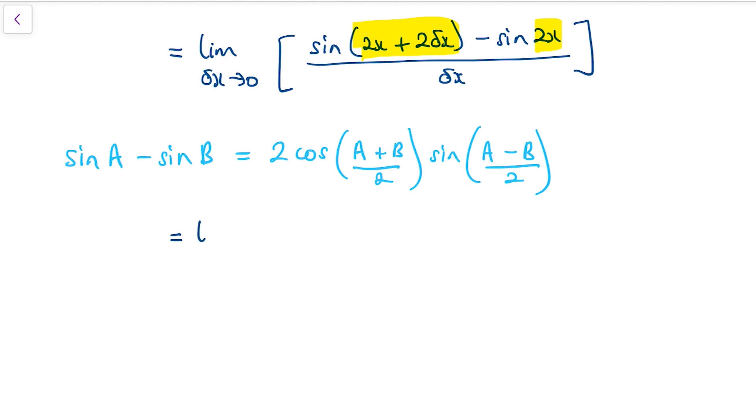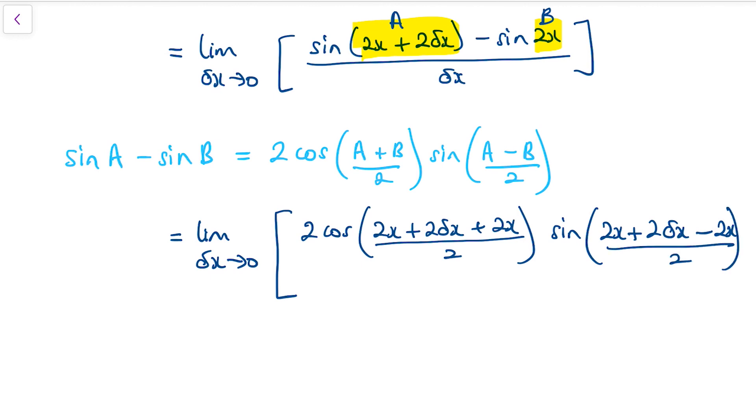We've still got the limit as delta x tends to 0. Now A is the 2x plus 2 delta x, and B is the 2x. So let's substitute those in. We have 2 cos of 2x plus 2 delta x plus 2x, all over 2, and then sine of 2x plus 2 delta x minus 2x, all over 2, and the whole thing is over delta x.